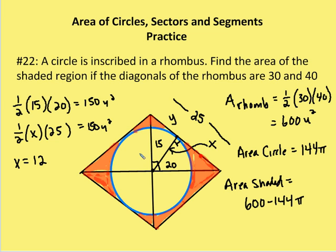With x equal to 12, the radius is 12. The area of the circle is πr² = 144π. So the area of the shaded region is the area of the rhombus minus the area of the circle: 600 − 144π.